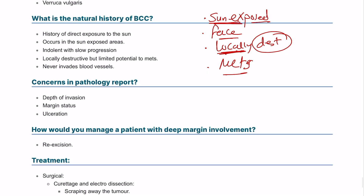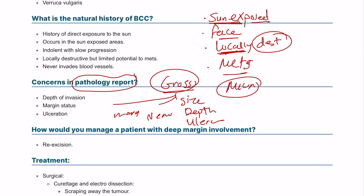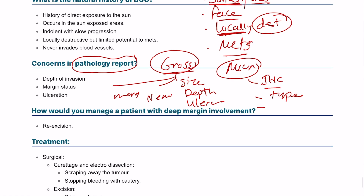In the pathology report, this question is repeated multiple times. Always classify into gross and microscopic. For gross findings, we look for the size of the tumor, depth of invasion, presence of ulceration, presence of necrosis, and margin status. For microscopic findings, we look at immunohistochemistry, the type of cancer, and any cellular atypia.